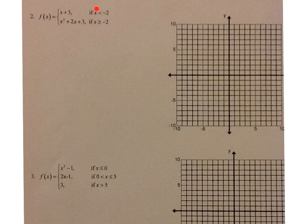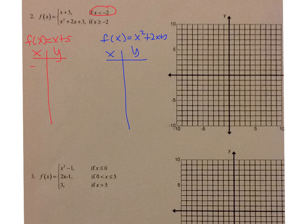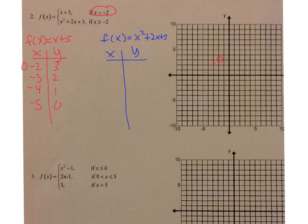Let's try another one. I have f(x) equals x plus 5 for x is less than negative 2, and f(x) equals x squared plus 2x plus 3 when x is greater than or equal to negative 2. For f(x) equals x plus 5, x has to be less than negative 2, so at negative 2 I'll have an open circle. I'll use negative 3, negative 4, negative 5. The y values are 3, 2, 1, 0. Plotting: (negative 2, 3) open circle; (negative 3, 2); (negative 4, 1); (negative 5, 0). And that keeps going.